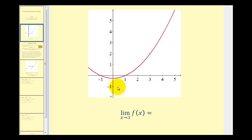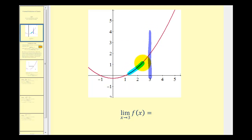Let's do a quick review of the idea of a limit informally. The limit as x approaches 3 of f of x exists if as we approach positive 3 from both the left side and the right side and we approach the same function value, the limit exists and is equal to that function value.